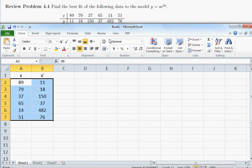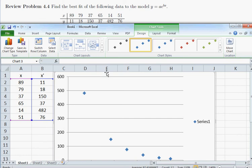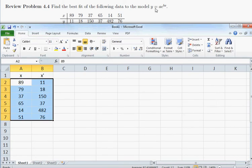If I draw a quick scatter diagram of this, insert scatter, we see that the data definitely does not follow a linear trend. It's got a definite curve to the data. And so a linear regression fit is not appropriate. So the question is to fit it to something else, namely y equals a times e to the bx.